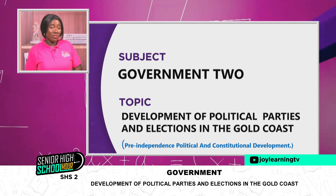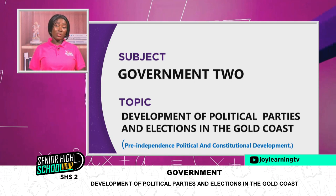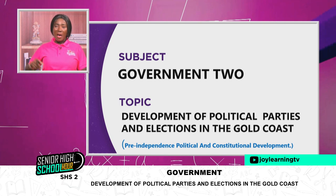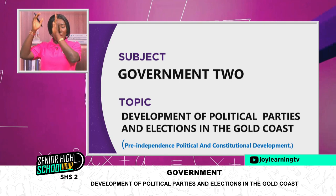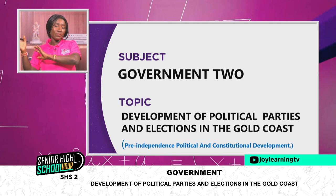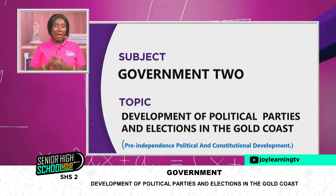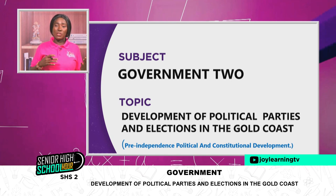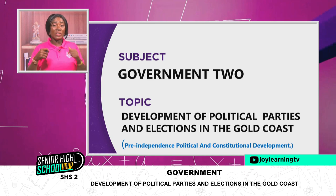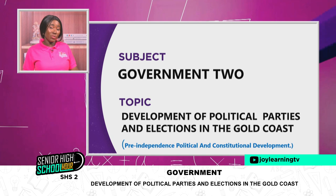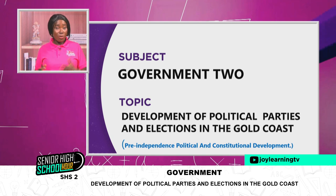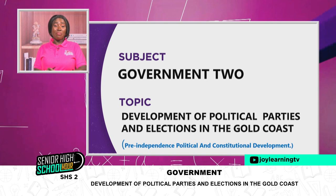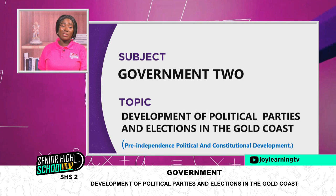Then we talk about Transvolta Togoland. That was given to the British and the French because originally it belonged to the Germans. Transvolta Togoland was divided between the British and the French. That part close to what is now the Volta Region was given to Ghana as trustee. The United Nations decided what to do with it, and when Dr. Kwame Nkrumah became president, he gave them a plebiscite to decide.